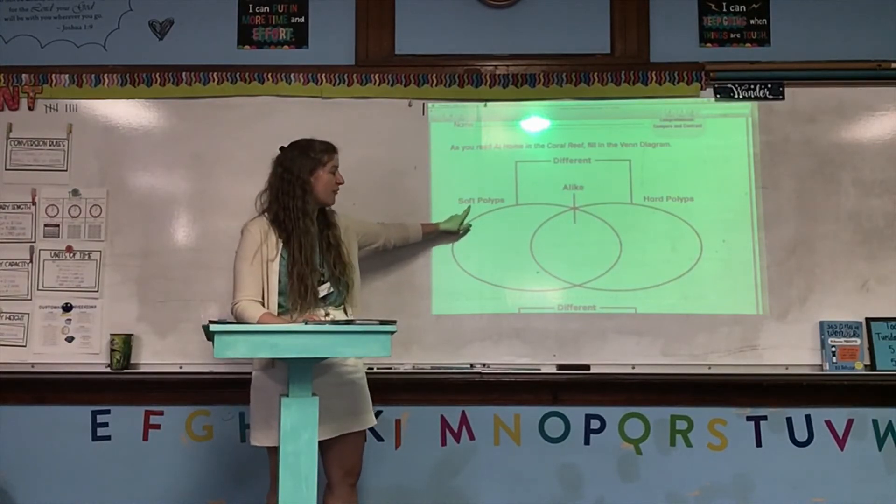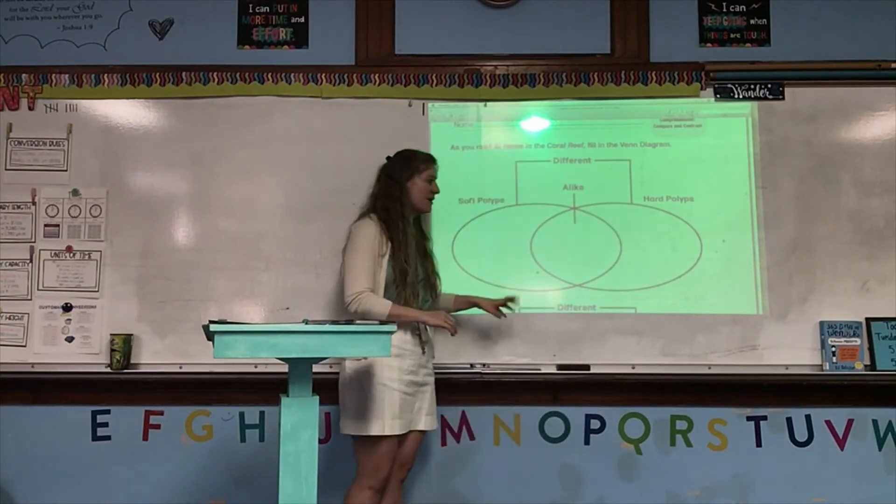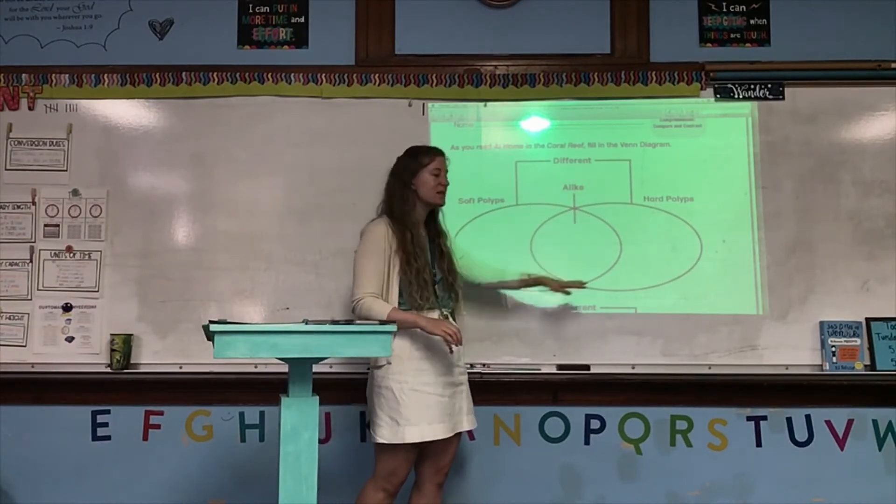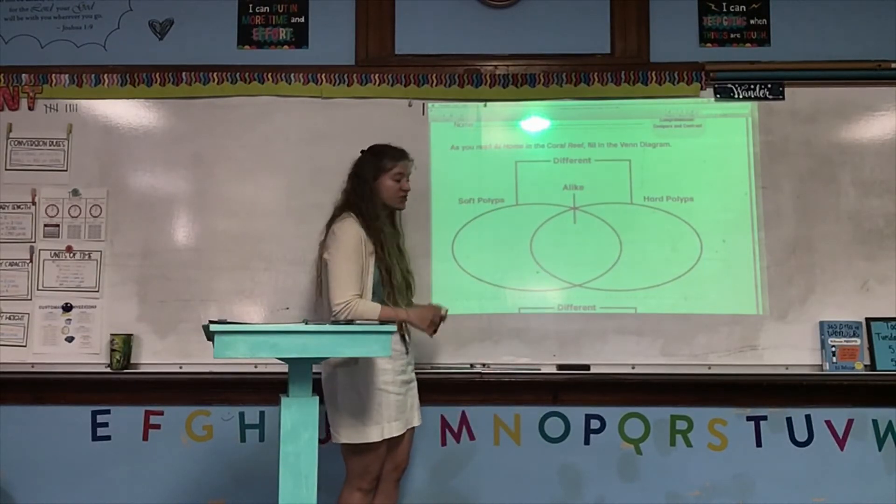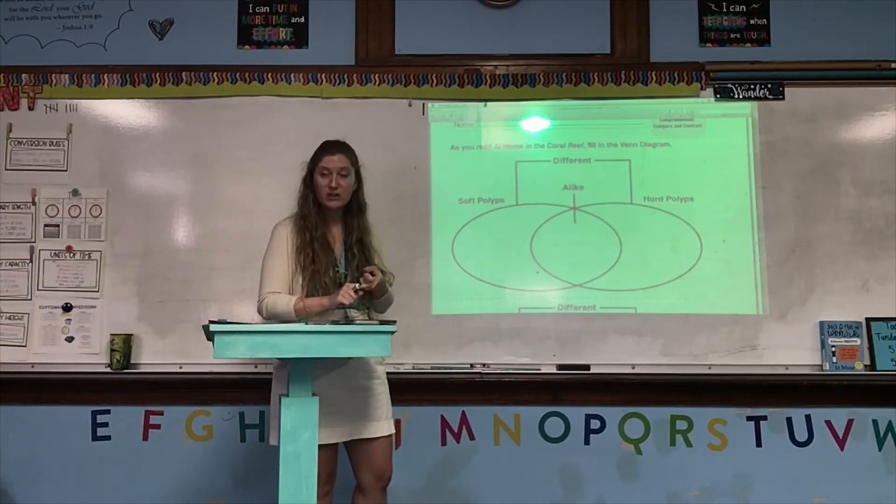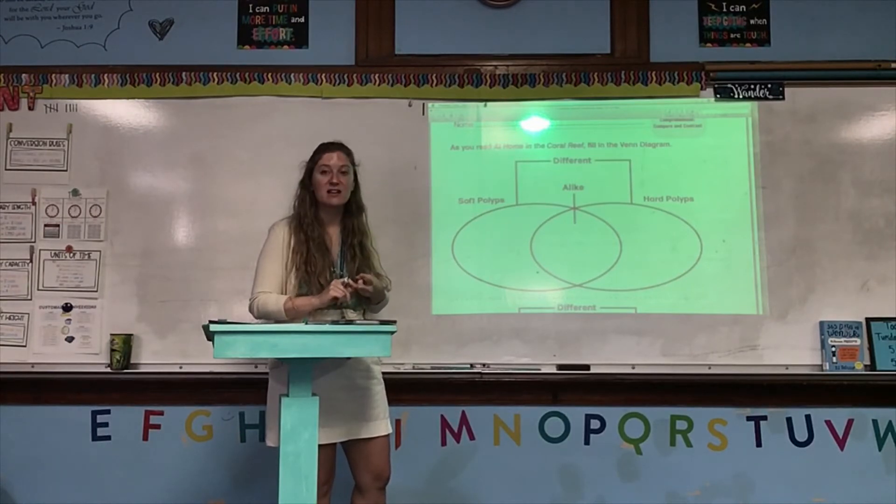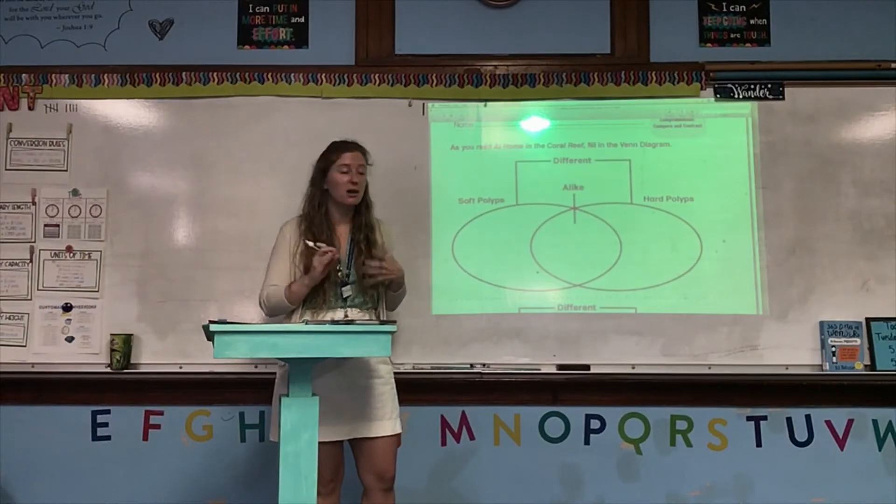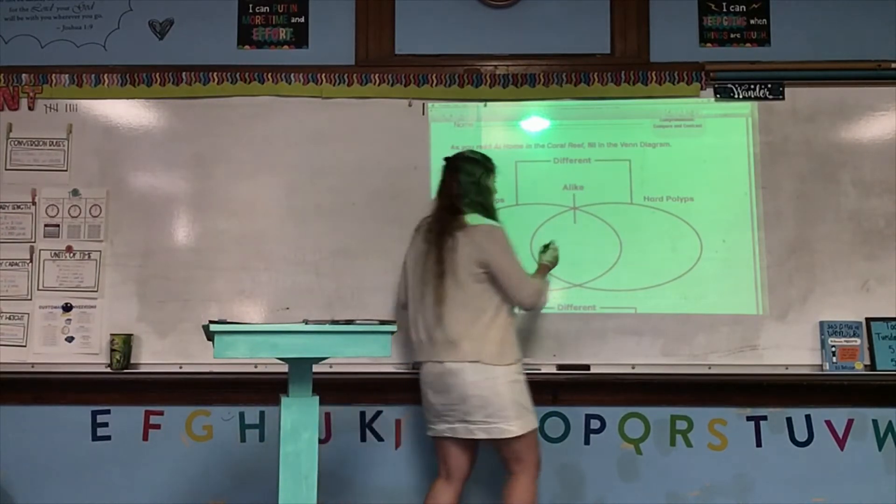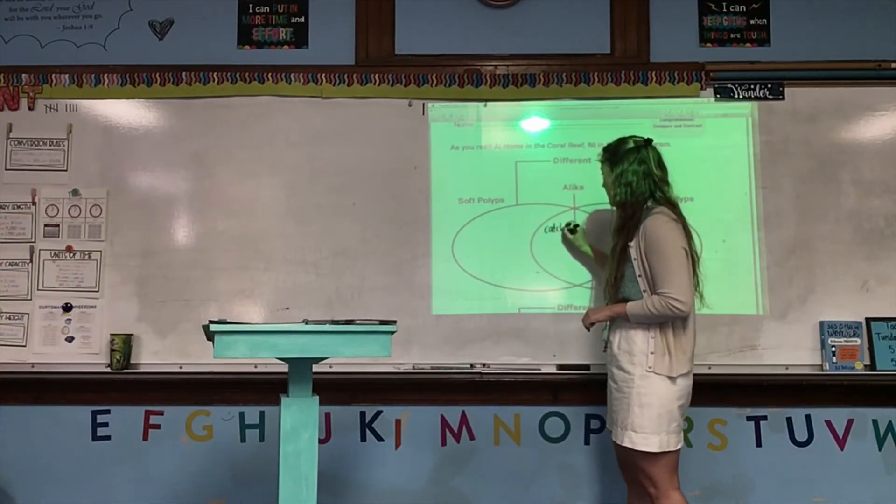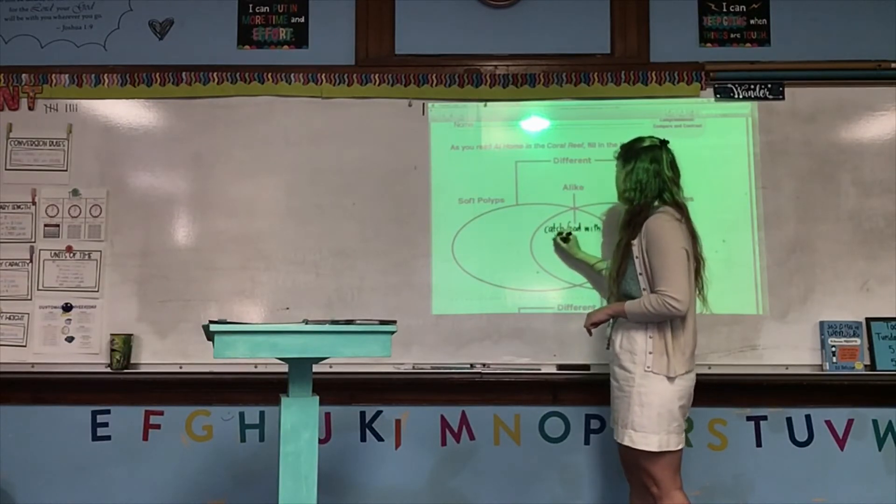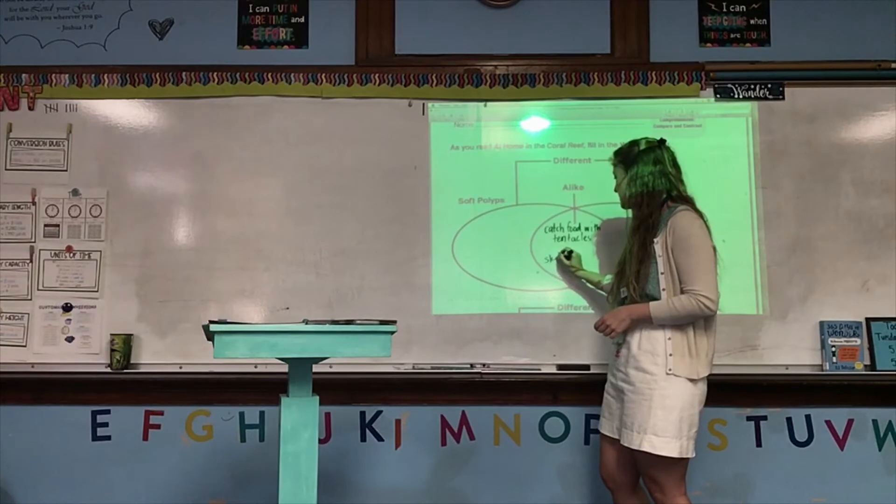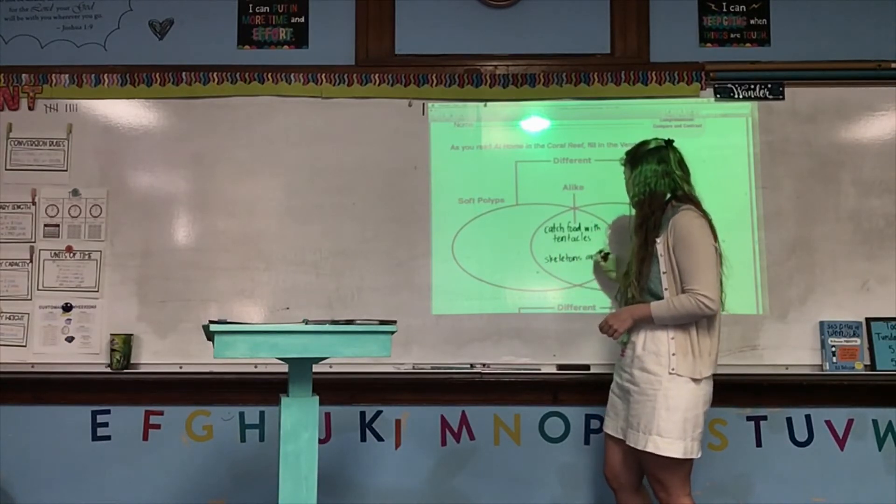So, right now, we see that our first Venn diagram is comparing soft polyps and hard polyps. Remember, a Venn diagram is where we have two circles that connect. The place where they connect is where we list everything that is alike about the two objects. The places that do not connect are where we write what is different. Well, so far, we've read that all coral polyps catch food with their tentacles and live so close together that their skeletons are connected. So, that means, since it says all of them, and since it does not designate whether they're talking about soft or hard polyps, we know that means all of them. So, we just read how they are alike. First, they catch food with their tentacles and they live so close together that their skeletons are connected.